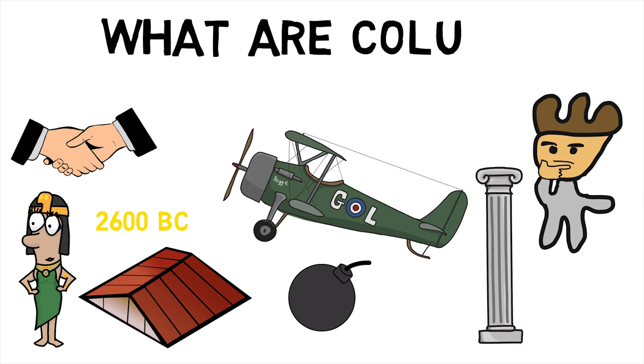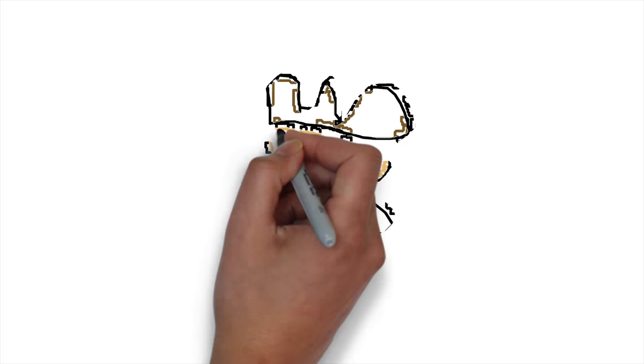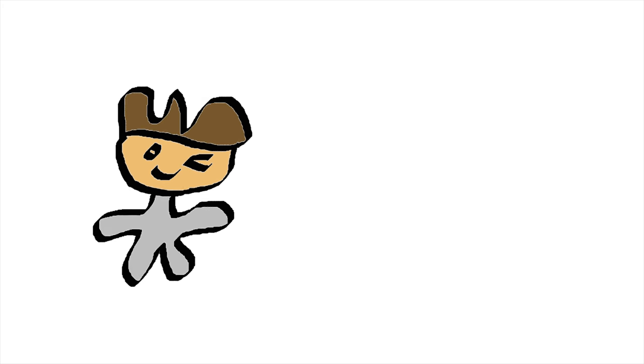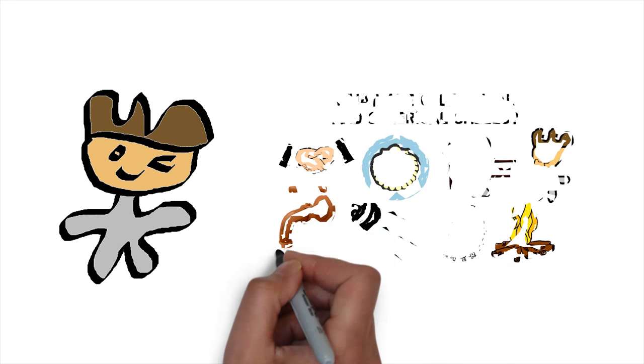This makes us wonder, what are columns and struts? Before we jump in, check out the previous part of this series to learn about what cylindrical and spherical shells are.